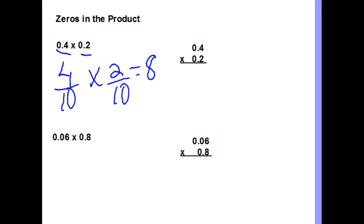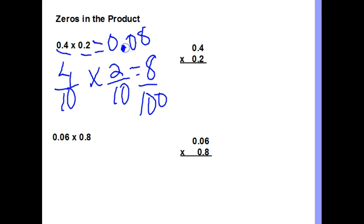That equals 8, because 4 times 2 is 8, but 10 times 10 is 100, so this is 8 hundredths. We'd write 8 hundredths as a decimal, making sure the 8 ends up in the hundredths place. Make sure when doing this that you multiply both the numerators and denominators — the top numbers and the bottom numbers — so the answer is 8 hundredths.